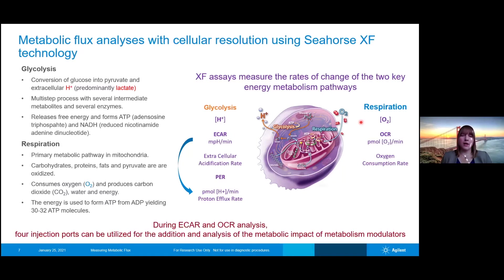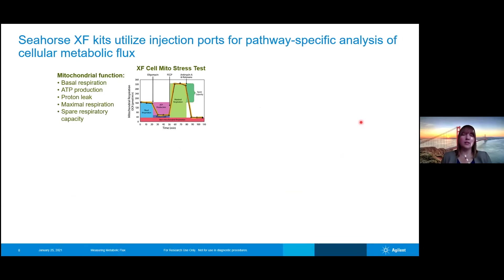An important note about the seahorse assays is that during our ECAR and OCAR analyses, there are four injection ports that we can use. These can be used to add different compounds to the cells, and we can look at the metabolic impact of these compounds. We use that to develop different test kits. In one of our test kits, the cell mitostress test kit, what we do is focus on the oxygen consumption of the cells. We're able to inject different compounds, including oligomycin, FCCP, antimycin A, and rotenone to the cells during this assay.